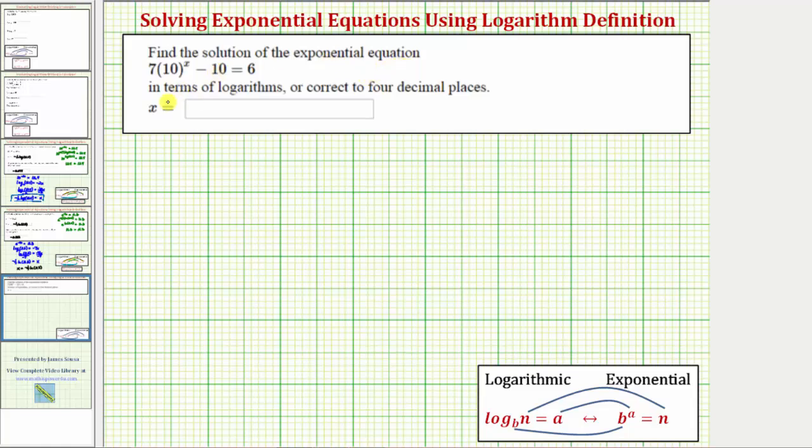We want to solve the given exponential equation in terms of logarithms or correct to four decimal places. So our exponential equation is 10 raised to the power of x minus 10 equals six.